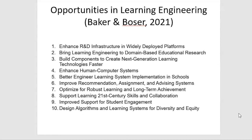And finally, but definitely not least important: designing algorithms and learning systems for diversity and equity. Aaron Hahn and I have a recent literature review demonstrating that most educational algorithms have never been tested at all for bias. And of the ones that have, we have very limited evidence on what forms of bias are important to resolve. There's a lot of open work here if we're going to move forward with educational technology that works well for all students, particularly those who have been historically underrepresented or under-supported.